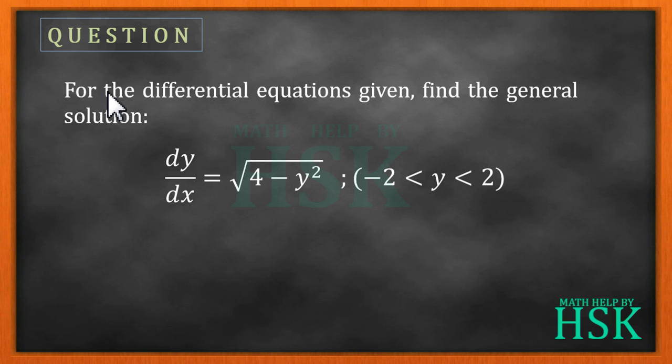Hello friends, the question is like this: for the differential equation given, find the general solution. The differential equation is dy by dx equals square root of four minus y squared, where the value of y lies between the interval minus two to two.